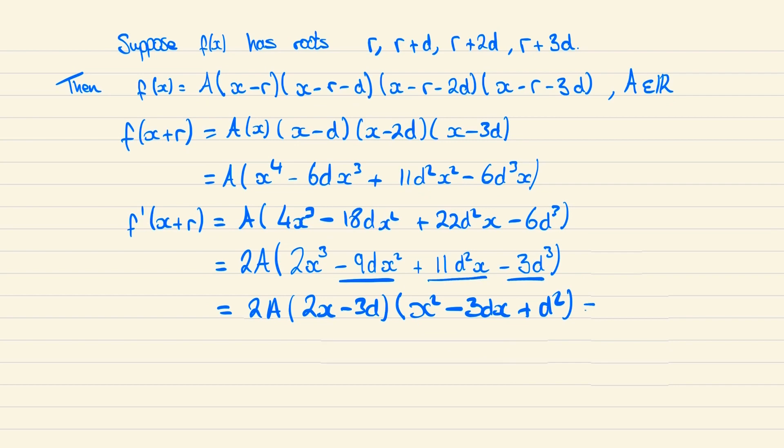Now considering the zeros of this function we can see one immediate solution is when x equals 3 over 2d. And the others will appear when this quadratic equals zero which we can solve by completing the square.